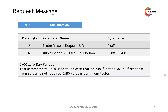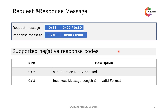The request message format has only 2 bytes: the SID and the sub-function. The SID is 0x3E, the Tester Present Request SID. The sub-function is called the zero sub-function. You can send a value of 0x00 if you require a response from the ECU server, or if you don't require any response, you can send a value of 0x80. So the request message structure is 0x3E followed by 0x00, or 0x80 in case you don't require a response from the server.